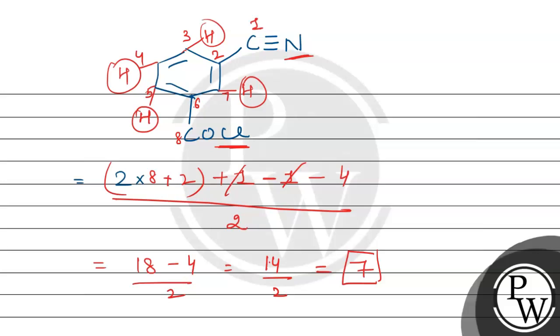Which means the number of multiple bonds and number of rings sum should be 7. We can verify this. If we expand and write it this way, this is COCl. Here we can see the multiple bonds: first, second, third, and this is one ring. Four. Then fifth, there is one multiple bond between carbon and oxygen. And carbon and nitrogen have three bonds, so we can count it as two. Two multiple bonds. So it is one, two, three, four, five, six, and one ring, which means total seven.